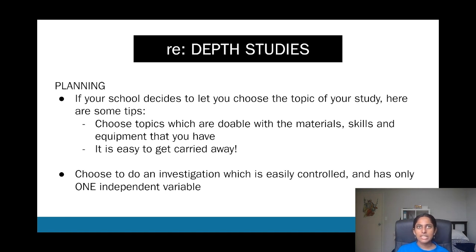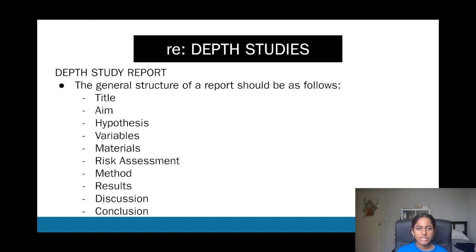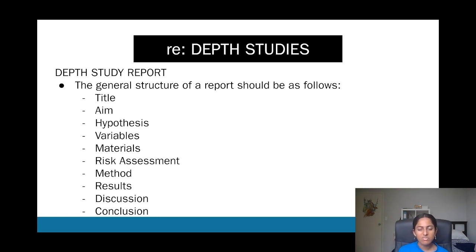Choose an experiment that's easy to control with only one independent variable. The general report structure includes: a title and aim, a hypothesis, a method section covering measurements, variables, and materials, a separate risk assessment section, results, a discussion exploring trends and variables like validity, reliability and accuracy, and finally a conclusion that states whether or not you've met your aim.